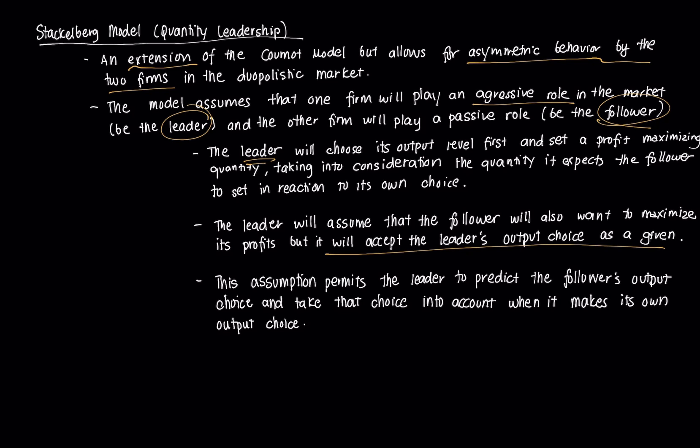The follower takes the leader's choice as given — something it cannot influence — similar to the Cournot model, but here the leader's decision plays a direct role in the follower's decision. This differs from the standard Cournot assumption in which both firms set their quantities simultaneously and act symmetrically, both behaving as follower firms. In the Stackelberg case there is one leader and one follower, with information asymmetry allowing one firm to act ahead of the other.